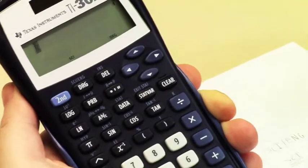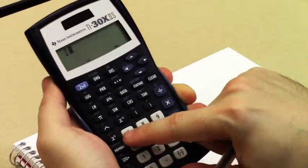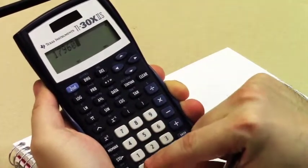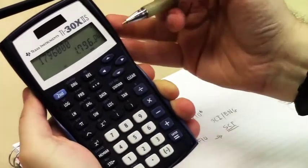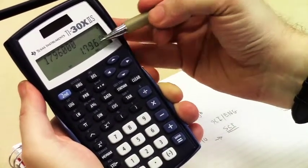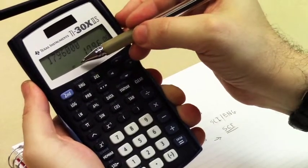So, in this case, in order for us to do this problem, what we're going to do is just simply type in the number, like so, and then hit enter. And the calculator is going to automatically convert it into scientific notation if you already have it in scientific notation mode.